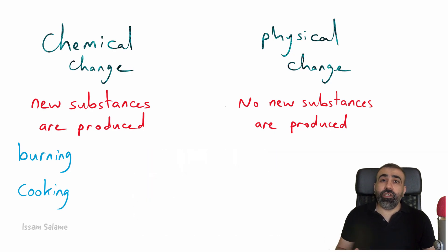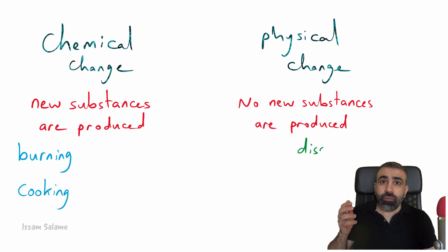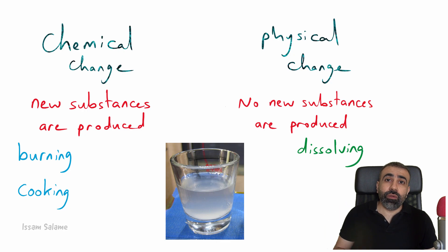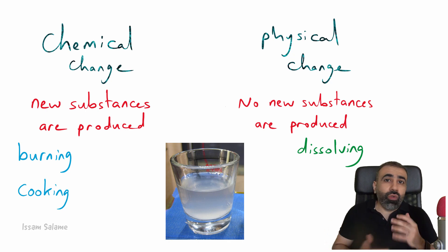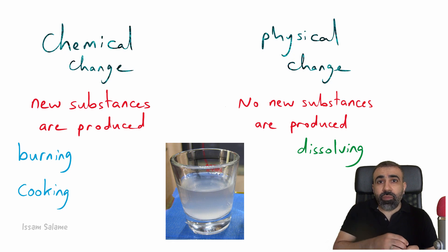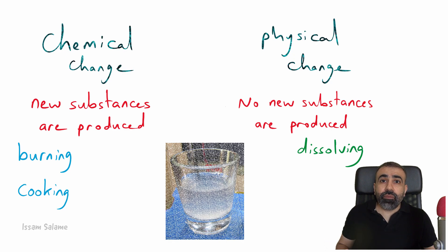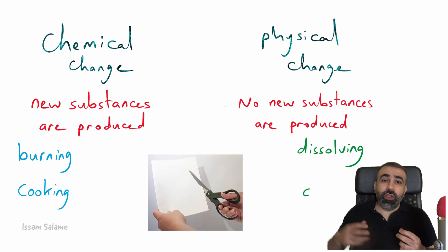Now let's talk about physical change. In physical change we don't get new substances. For example, if you mix sugar with water — when you dissolve the sugar in water, you get sweet water. That's it. No new substances are produced, and you can separate the sugar from the water.